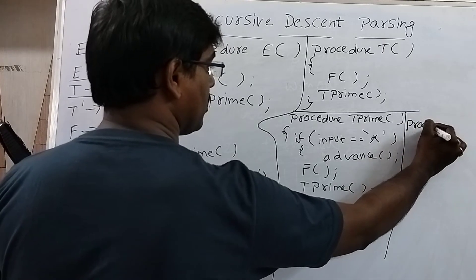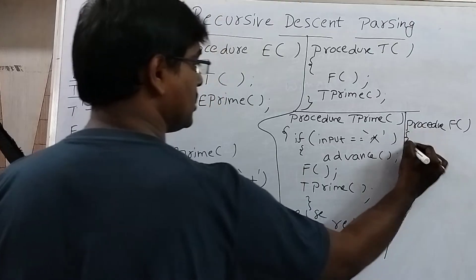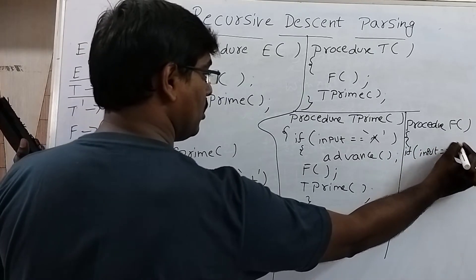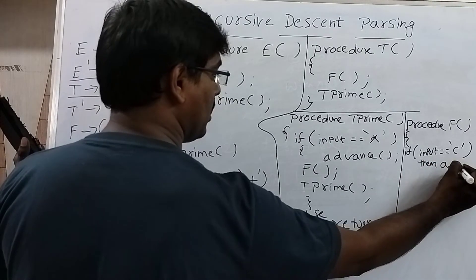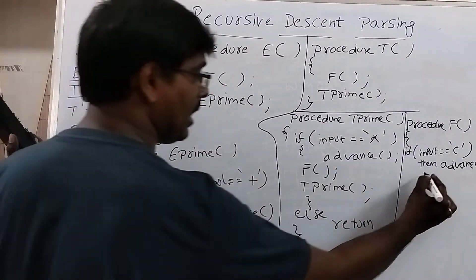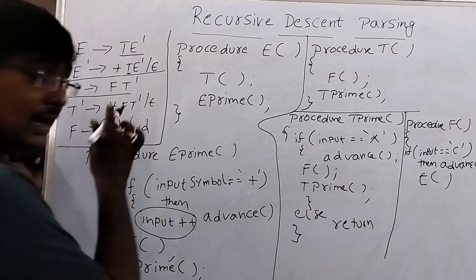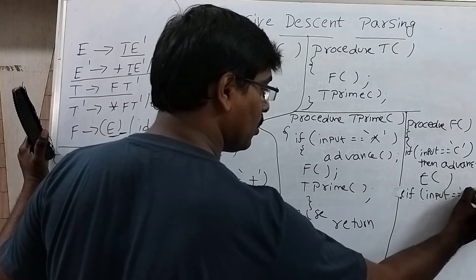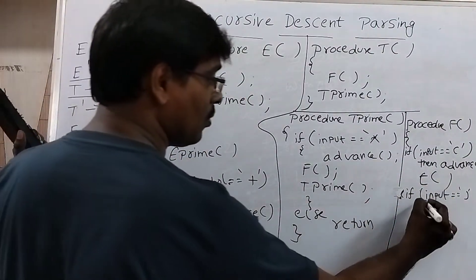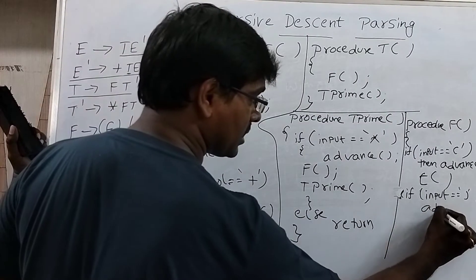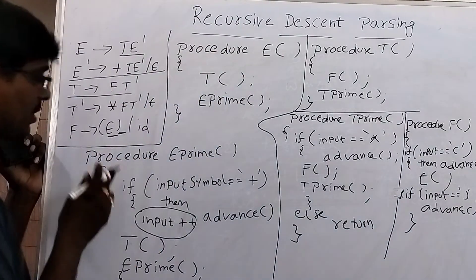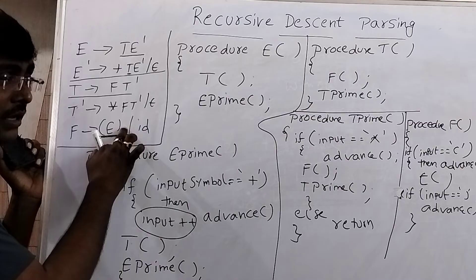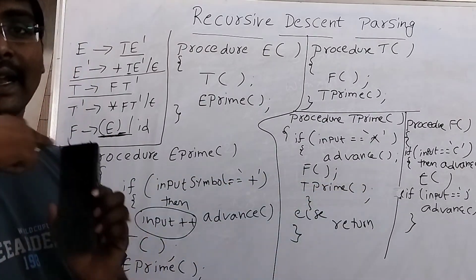Now write procedure F(). Under F(), the first production starts with a left parenthesis. Write: if input_symbol == '(', then advance(). Next call E(). Then again check: if input_symbol == ')', then advance(). This entire block — left parenthesis, E(), right parenthesis — comes under the first if case. Whenever a terminal occurs, simply write the if condition and then increment the input pointer.